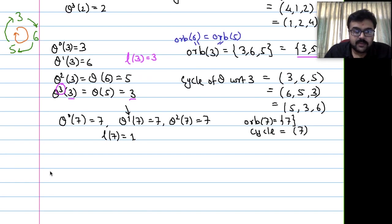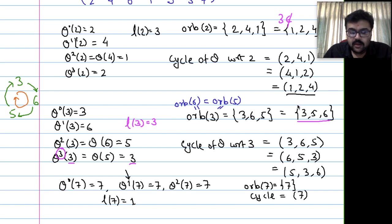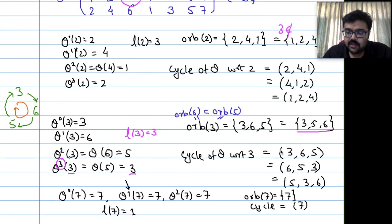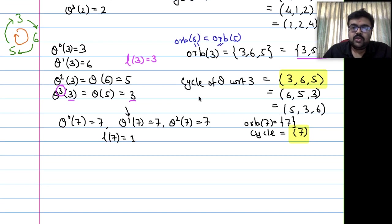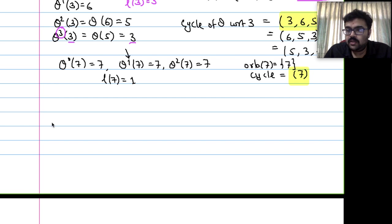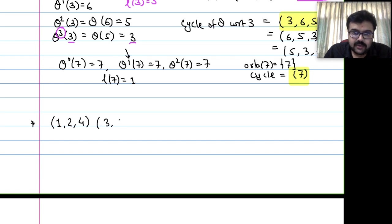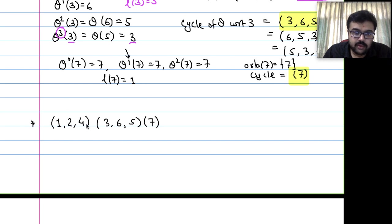Those who missed the class can try this for practice. We have cycles (1, 2, 4), (3, 6, 5), and (7). To multiply cycles we write them as permutations. The cycle (1, 2, 4) in S7 means 1 goes to 2, 2 goes to 4, 4 goes to 1, and all others — 3, 5, 6, 7 — are fixed.